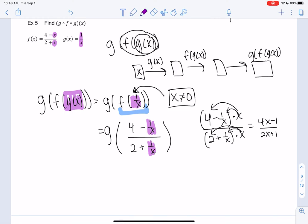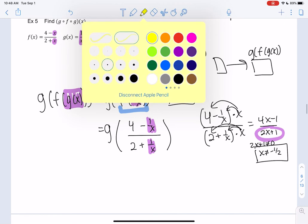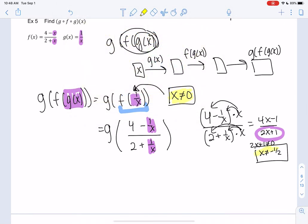And x can't equal negative 1 half, right? 2x plus 1, which gives me negative 1 half. We did this in the previous example. So now we have two restrictions on domain. x can't be 0 or negative 1 half. We'll just kind of keep track of those, come back to them. Let's highlight them in yellow or something so they stand out so we remember.